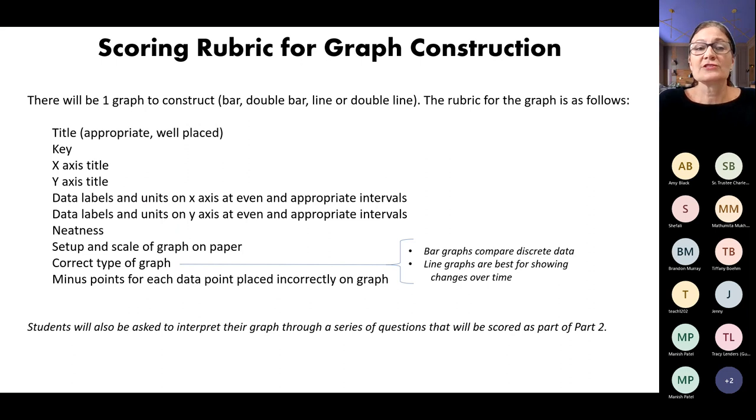Now here's the scoring rubric for the graph. I look at a title being appropriate and well-placed. The graph must have a key. There will be always at least two sets of data, so a key is necessary. I look for an X-axis title, a Y-axis title, data labels and units on both axes, even and appropriate intervals, neatness of the graph.